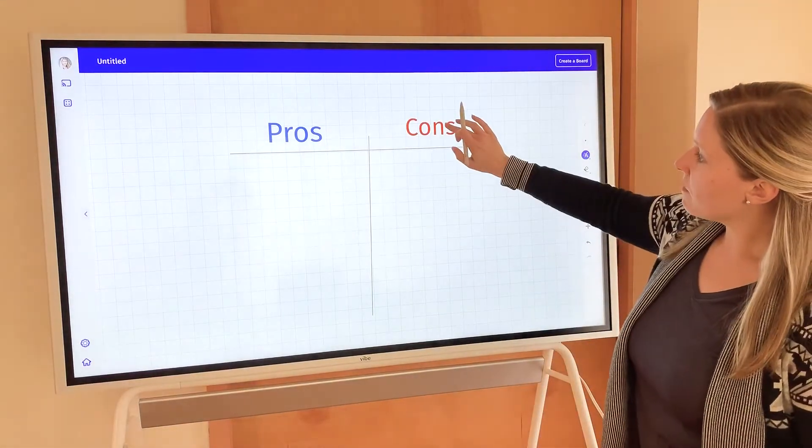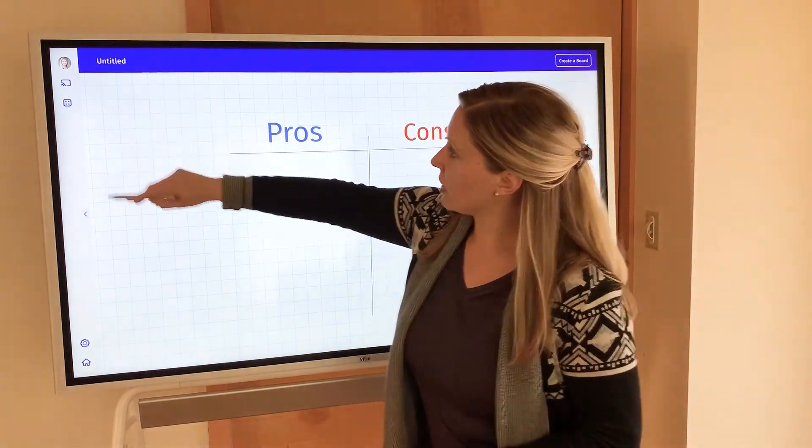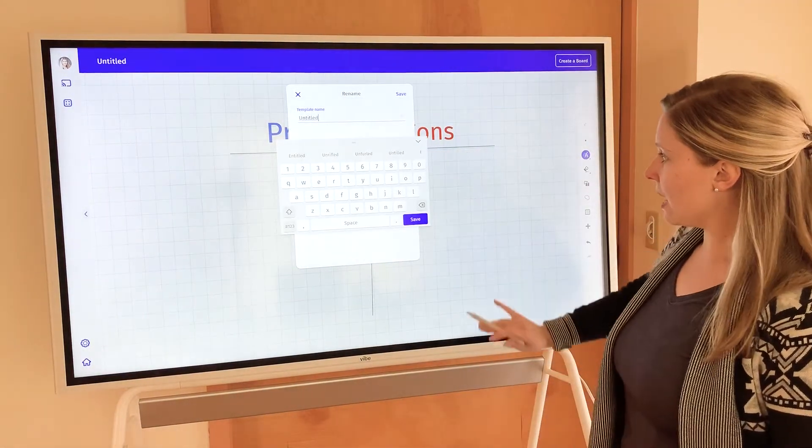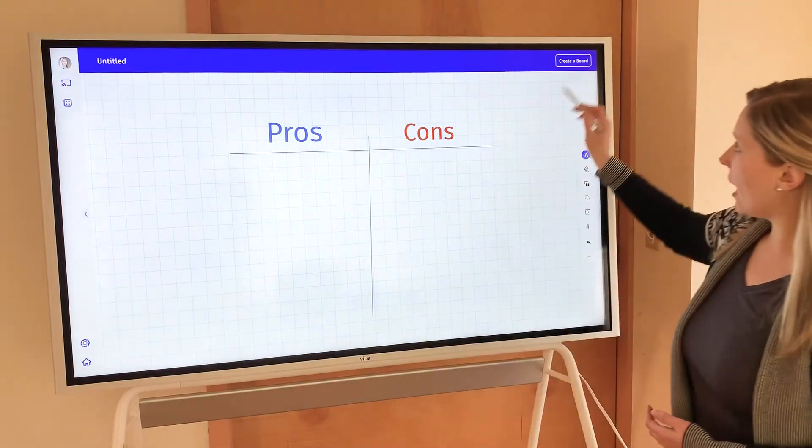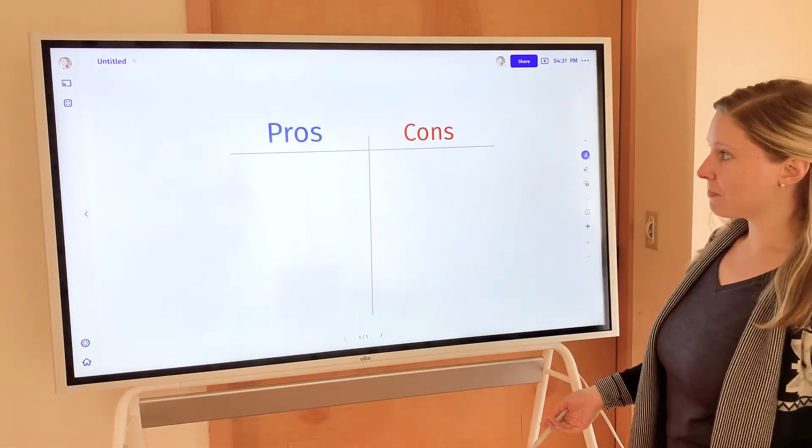And then after I've made this, I can then rename it by clicking on the title at the top, adding in the right name. And then when I'm ready, I can click up here to create a board to create a new board from this template. Here we go.